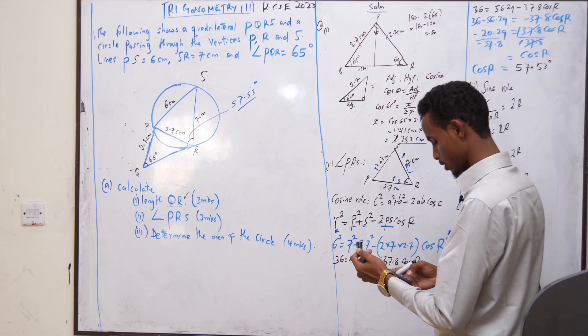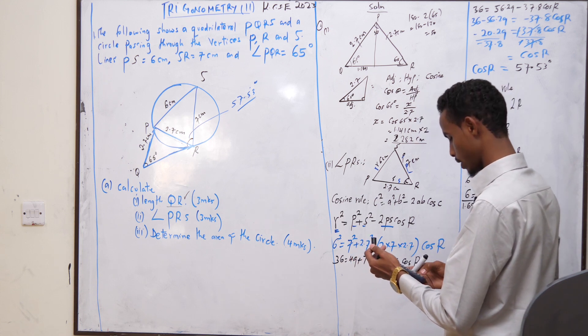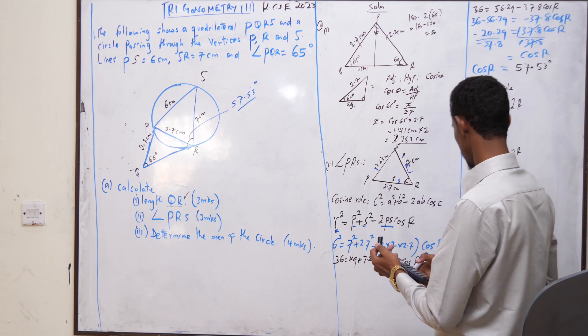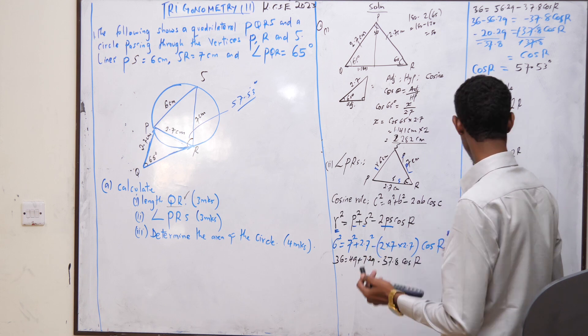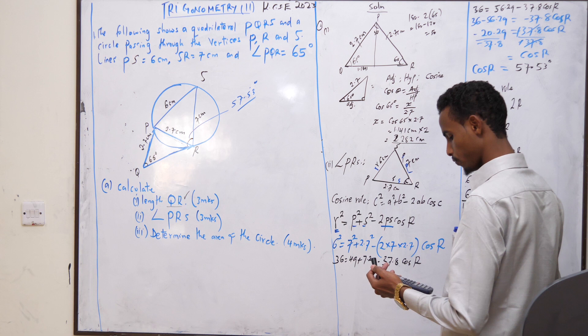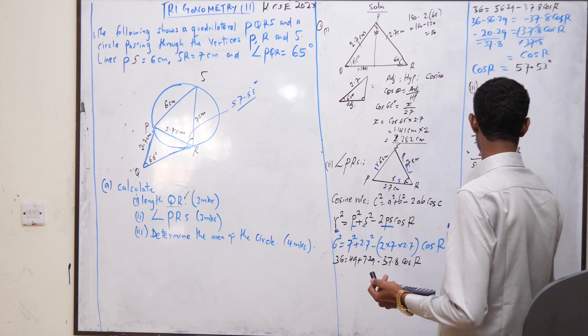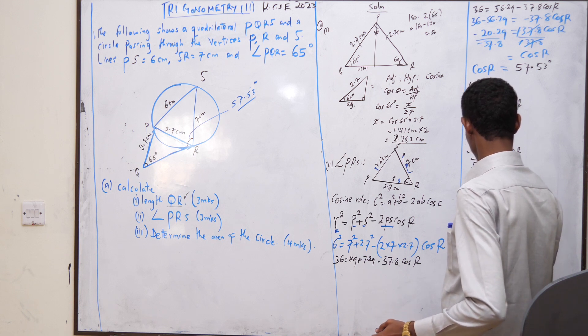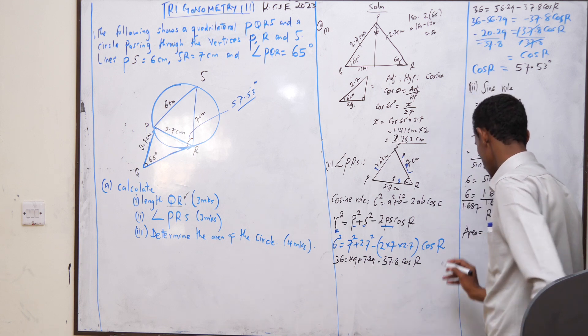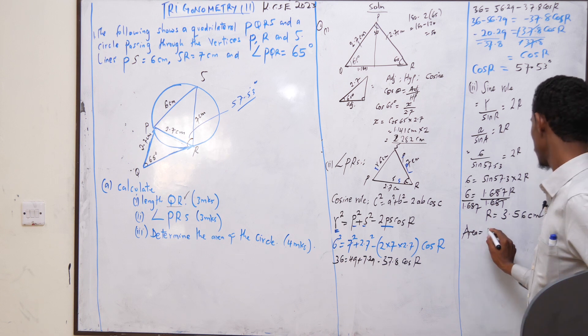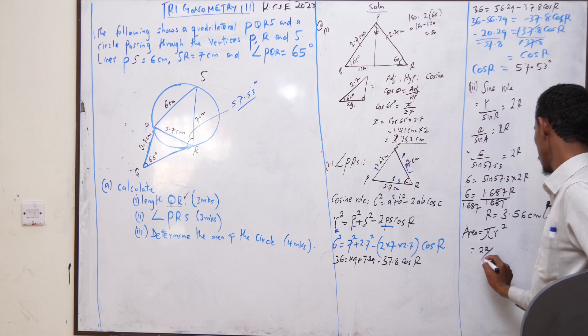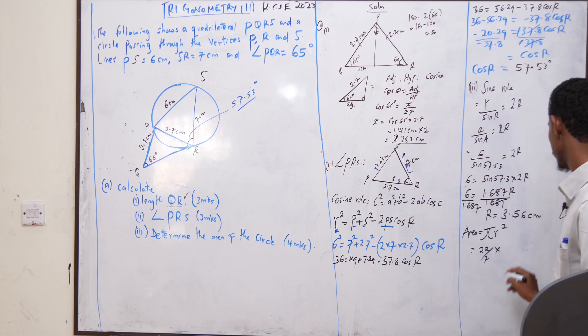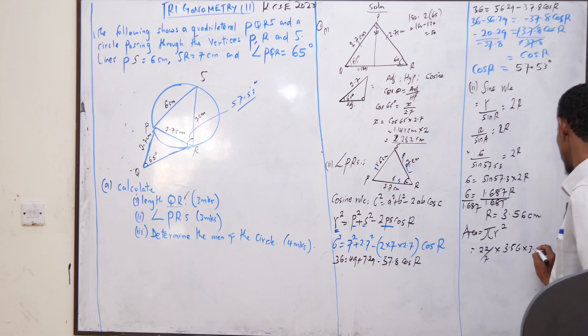R will be equal to 6 divided by 1.687. R equals 3.55 or 3.56 centimeters. How can you get the area of the circle? Area of the circle is πR squared.